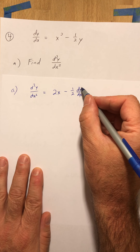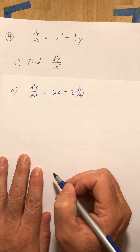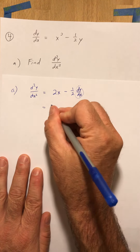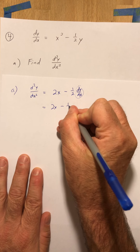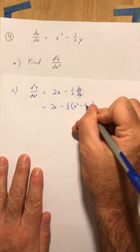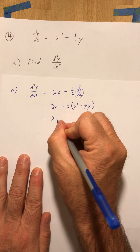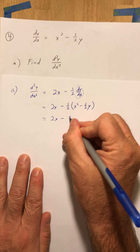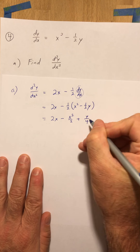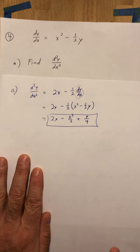It does ask for our answer in terms of x and y, so I need to substitute back. I have that above, so I simply substitute back and get 1 half times x squared minus 1 half y. Simplifying, you get 2x minus x squared over 2 plus y over 4. That's our answer for the second derivative.